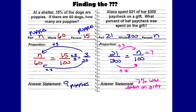Alana spent $21 of her $300 paycheck on a gift. What percent of her paycheck was spent on the gift? We're looking for the percent — the amount spent on the gift. The $21 represents the gift, so the part and percent represent the same thing. Of her $300 paycheck — that's your whole. Set up your percent proportion: 21 out of 300 is equal to n out of 100. Going left to right, from 300 to 100 — divide by 3. Divide your 21 by 3 and you get 7. Answer statement: 7% was spent on the gift.